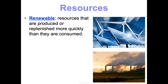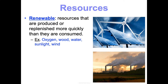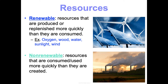Renewable resources are any resources that are produced or replenished more quickly than they are consumed — meaning we're not running out of them. Think of it like a grocery store where bread is always on the shelf because they're replacing it faster than it's being purchased. Examples include oxygen, wood, water, sunlight, and wind — things we're not really running out of right now. Non-renewable resources are those we're consuming more quickly than we can replace them, like going to the store and finding no bread because they haven't restocked fast enough.